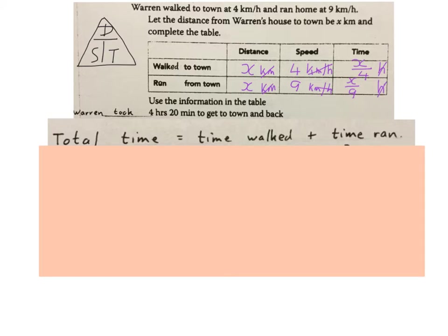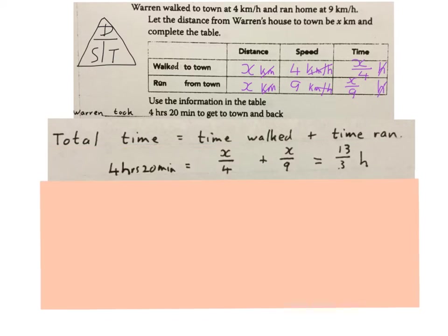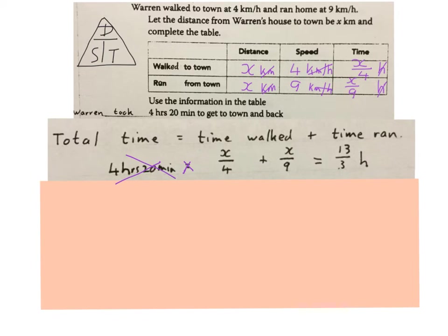Now we set up an equation. The total time that he took is equal to the time that he walked plus the time that he ran. So we have the time that he walked, which is x over 4, and the time that he ran, which is x over 9 — both look a bit ugly, but we know that this time plus this time equals the total time. The total time of four hours and twenty minutes, converted to thirteen over three hours, equals x over 4 plus x over 9. Now we have a normal equation with fractions, which we multiply by the LCD and solve for x.